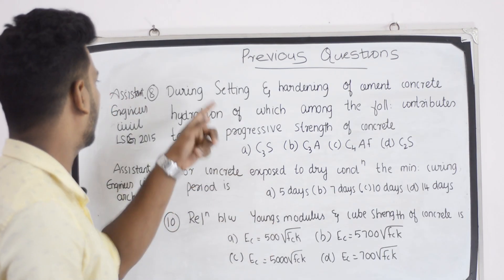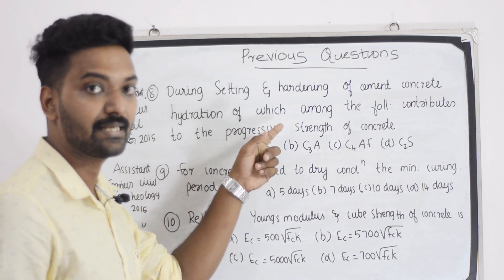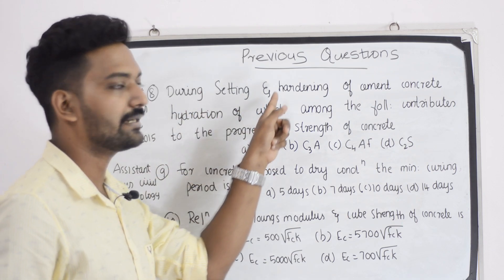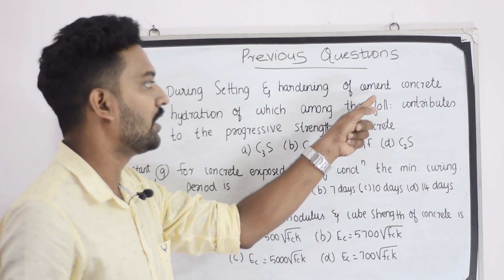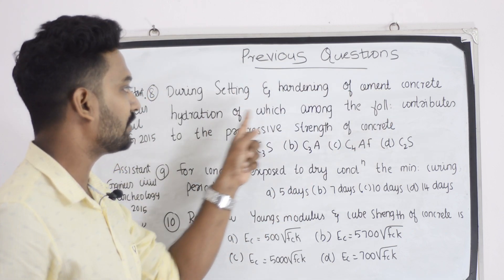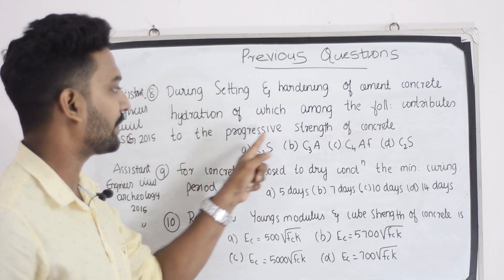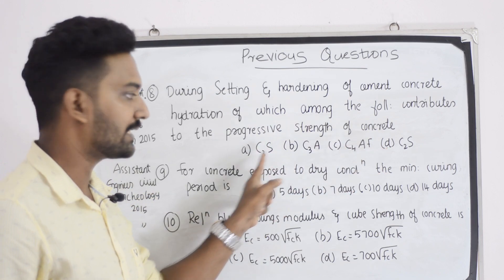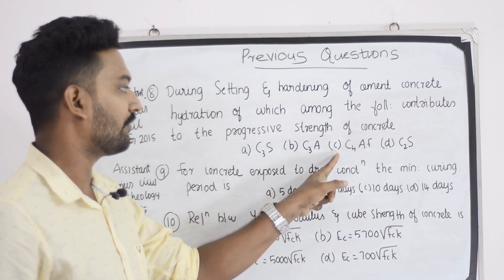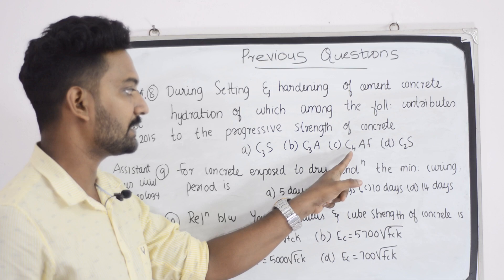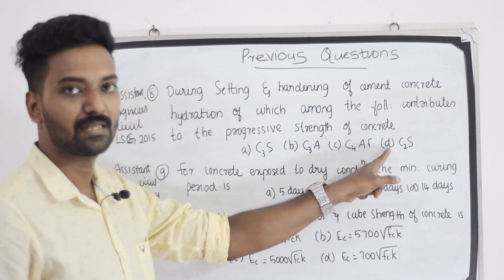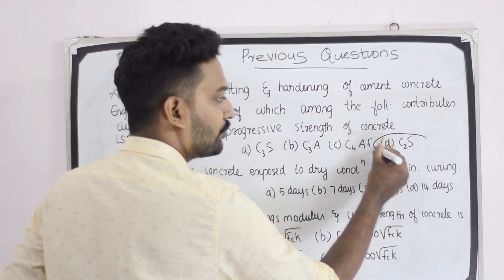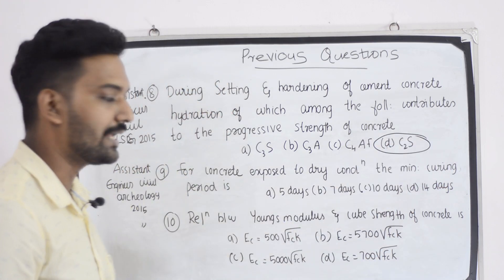Number eight question — assistant engineer, civil LSG: during setting and hardening of cement concrete, hydration of which among the following contributes to the progressive strength of concrete? First option C3S. Second option C3A. Third option C4AF. And fourth option C2S. The answer is C2S.